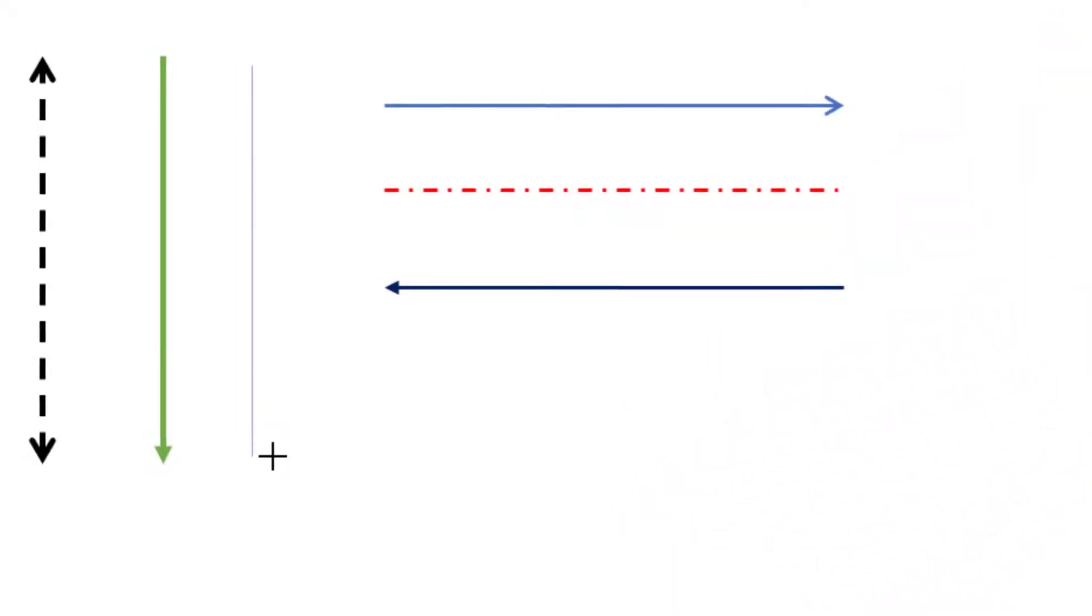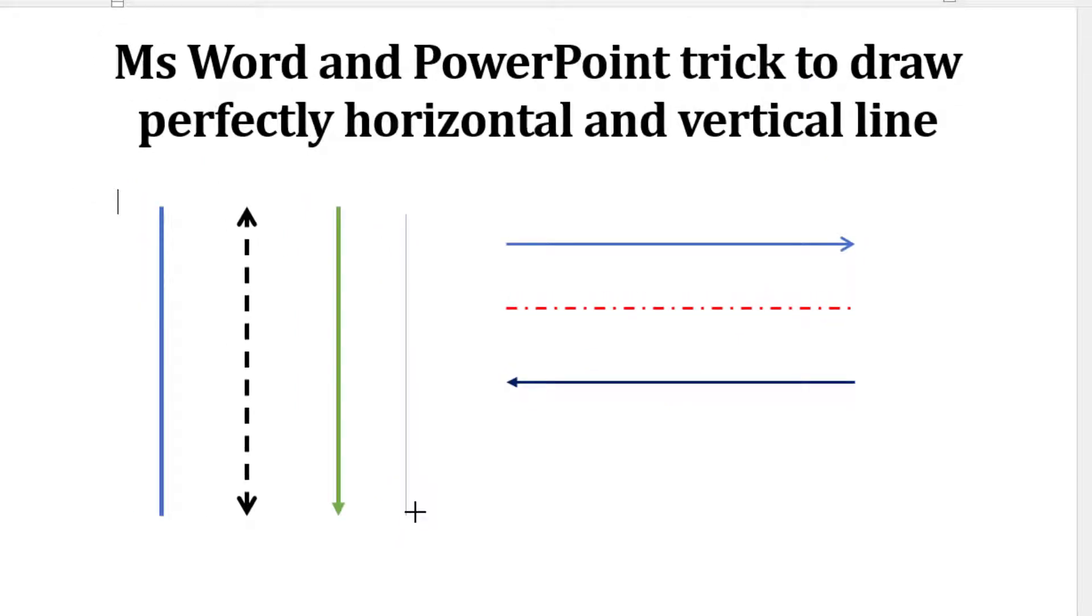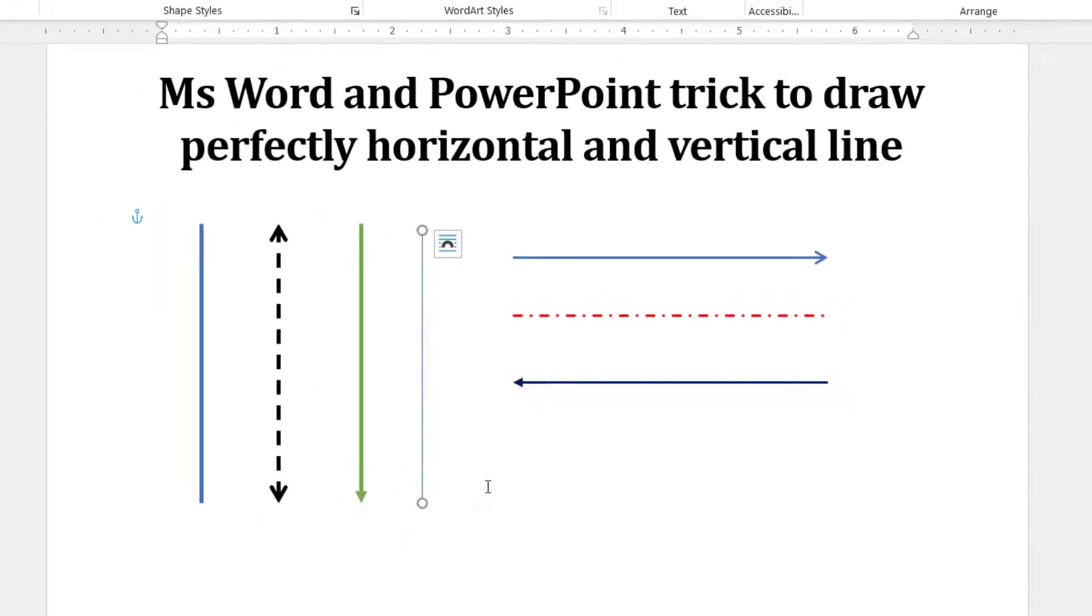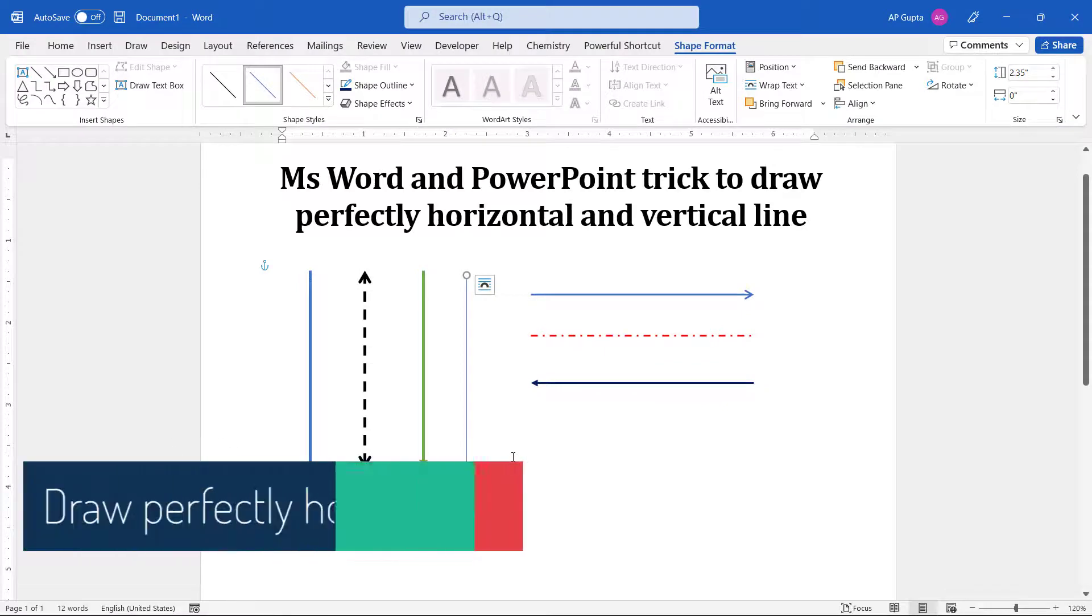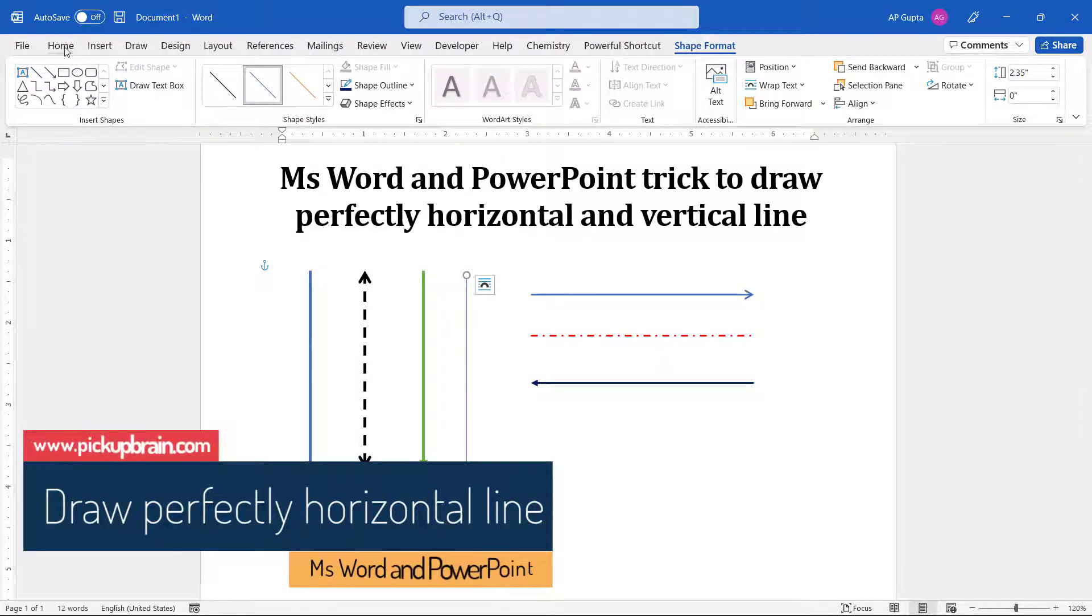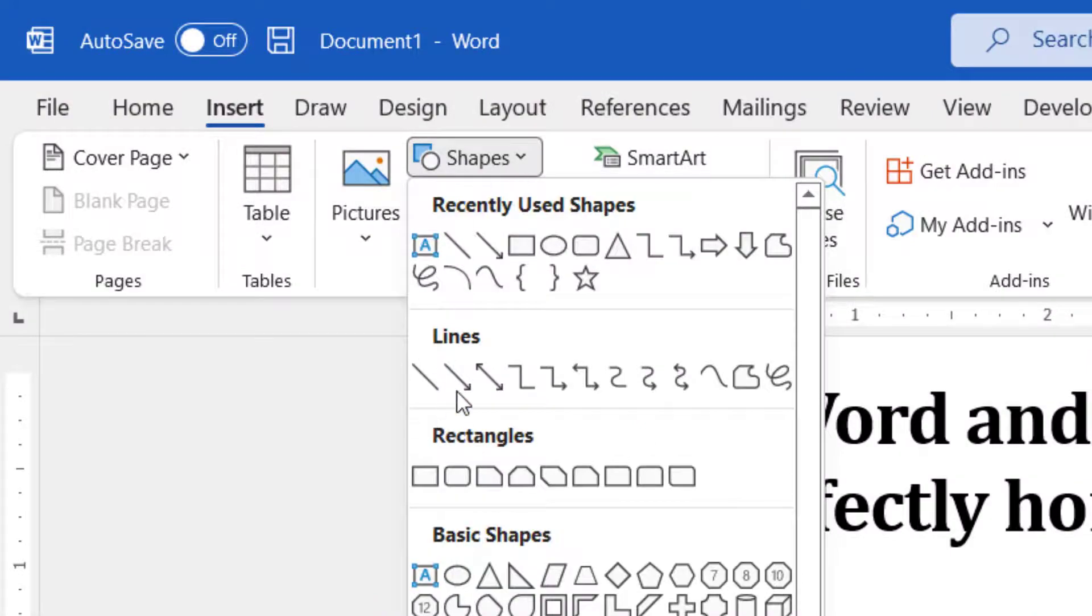Once you are done, you release the left mouse button and you get a perfectly vertical line. To draw a perfectly horizontal line, the trick is very similar. You again go to the Insert tab, click on Shapes, select the line.